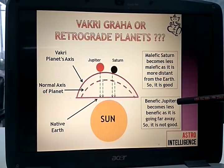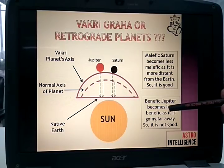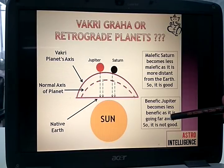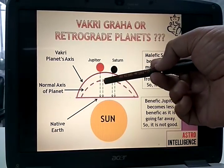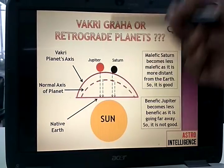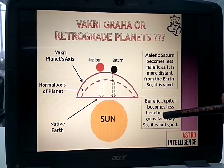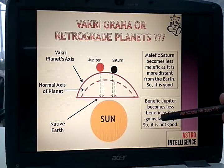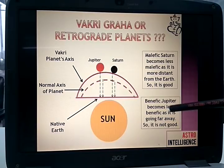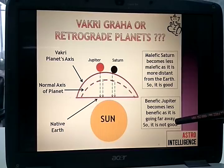Now we will take the example of benefic planets. Benefic Jupiter becomes less benefic as it goes away. When Jupiter was in its normal motion, it is quite closer to your earth, so the potential of the effect or expression coming from Jupiter will be more. And when it goes away from the earth, that expression will be diminished or less. So we can say that the Vakra effect on benefic planets is not good.